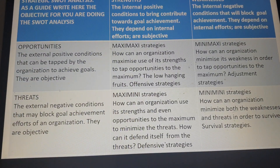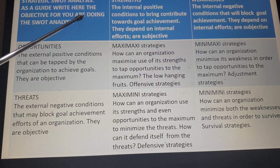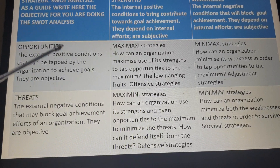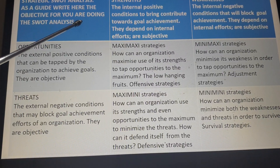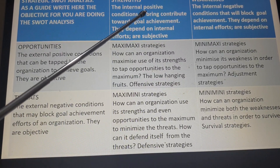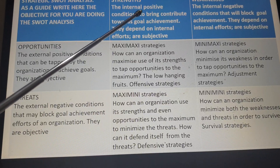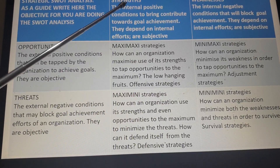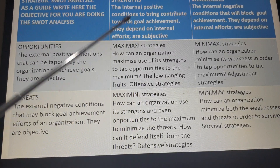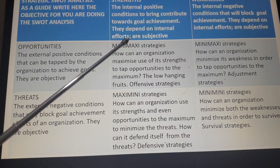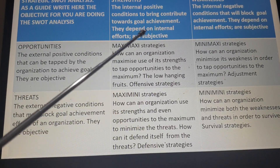We're talking of SWOT — a three-by-three matrix. In the first cell of the nine cells, as a guide, you write the objective for which you are doing the SWOT analysis. On the second cell of the top row are strengths, which are internal positive conditions that contribute towards goal achievement — they depend on internal efforts.